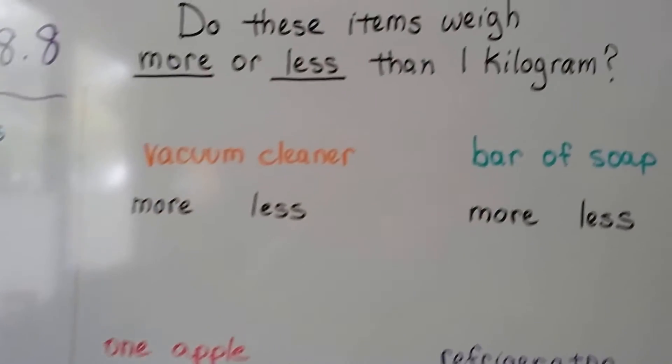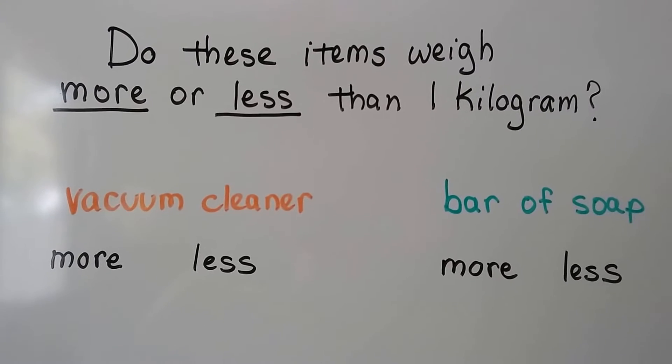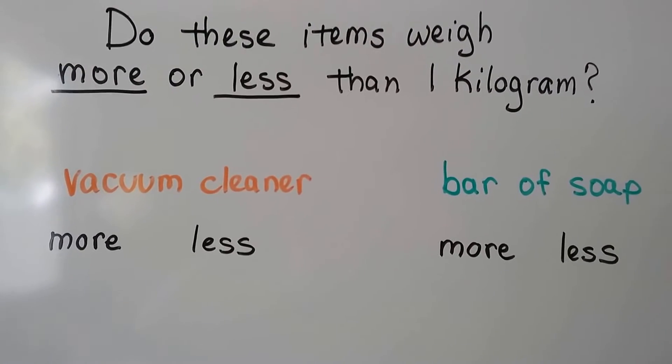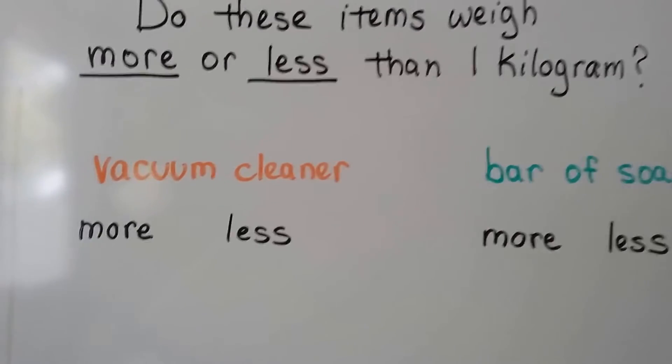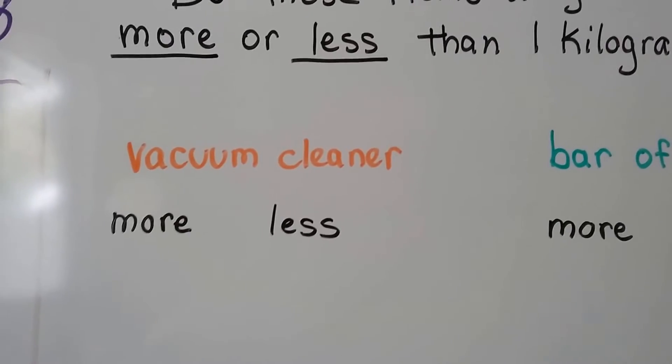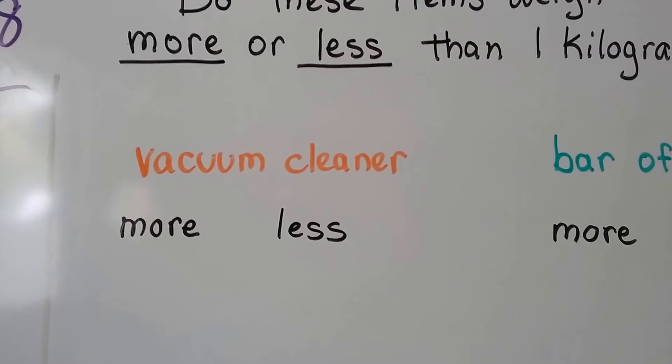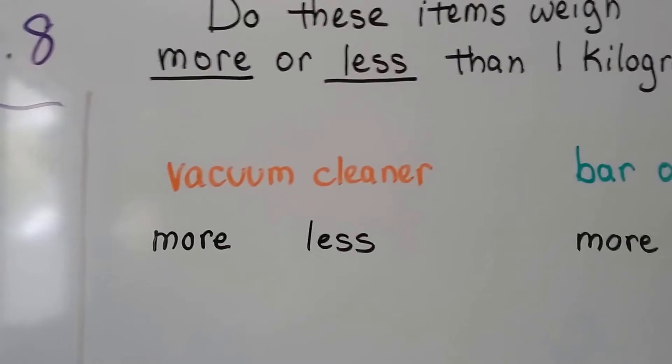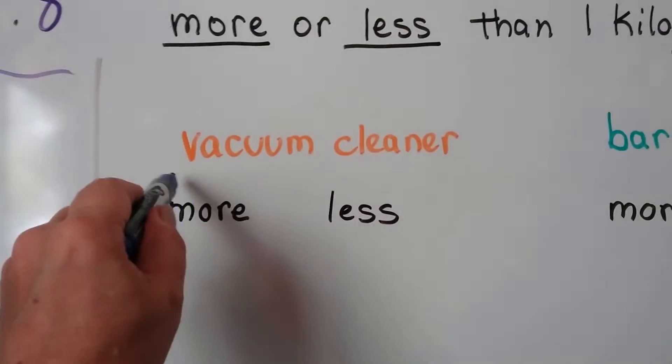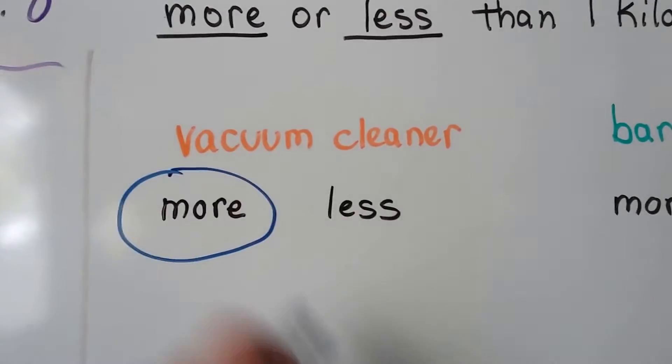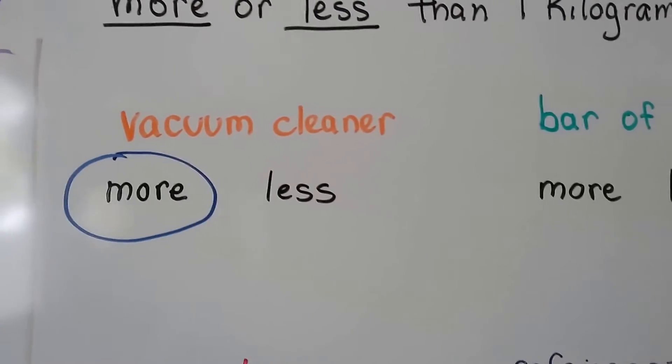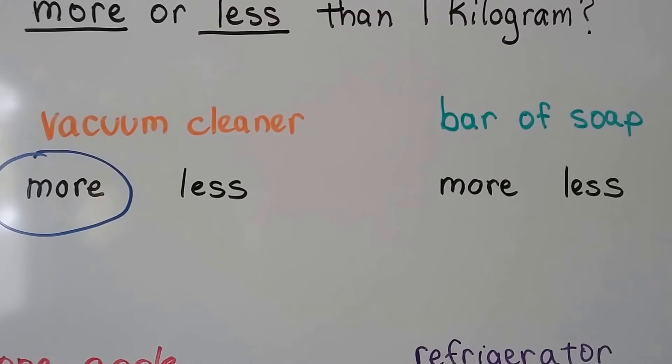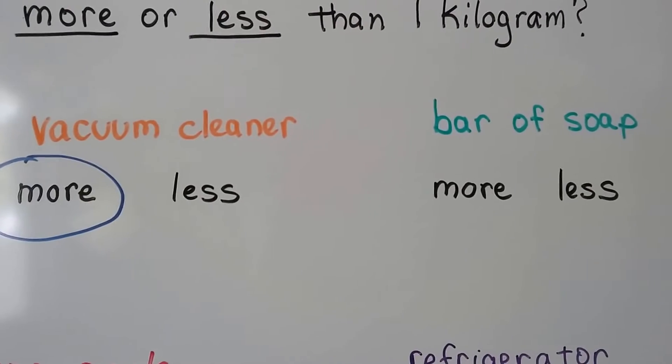So let's see. Do these items weigh more or less than one kilogram? So remember, a kilogram is about the weight of a hammer. So for a vacuum cleaner, do you think a vacuum cleaner is more or less than a kilogram? Is it more or less than a hammer? Well, vacuum cleaners can get pretty heavy. I would say more. If you said more, you're probably right. Depends on the type of vacuum, right? Could be a little handheld one that weighs the same as a hammer. But we're talking about a regular vacuum cleaner.